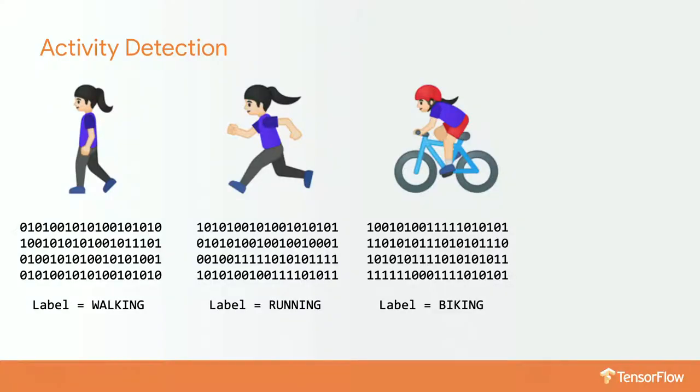This is typically called supervised learning, where you have a label. You have an input vector or input feature and you're basically saying this is what this means. For example, if you are moving at less than four kilometers per hour, then you are typically walking. This is also why it's called a black box — effectively, it's not generally human readable.